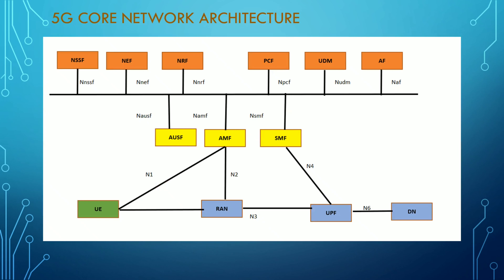Looking at the 5G core network architecture in detail: we have a UE connected through the RAN and AMF, the RAN is connected through the UPF, and UPF is connected to SMF through the N4 interface. The UE is also connected through the N1 interface via AMF. We also have three new blocks for 5G: NSSF, NEF, and NRF. Functions like AUSF, AMF, and SMF together essentially replace the MME, and PCF works like the PCRF.